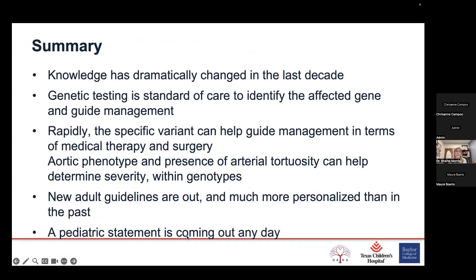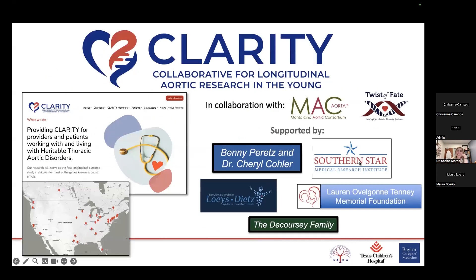In summary, knowledge has dramatically changed in the last decade for caring for kids with HTAD. Genetic testing is now standard of care and really guides management — the specific variant can help guide management as well. We want to look at the aortic phenotype and the presence of arterial tortuosity to guide management. New adult guidelines are out and are much more personalized than before. A pediatric statement is coming out any day, and the CLARITY registry — our pediatric arm working in collaboration with MAC — is recruiting patients.